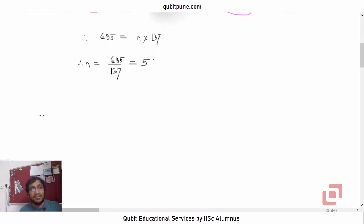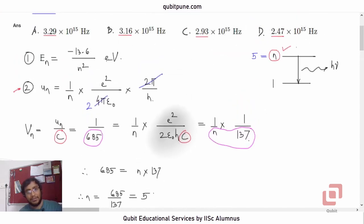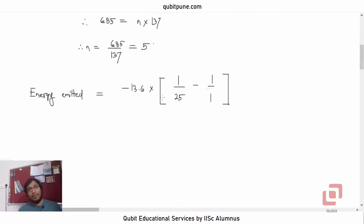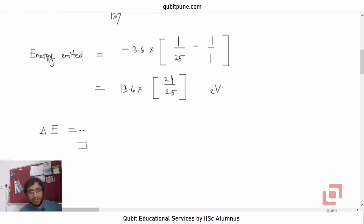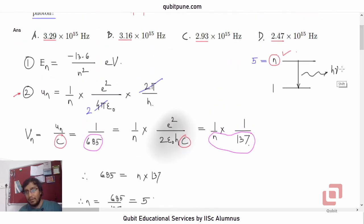Now let us calculate the energy emitted in this transition. Energy emitted will be negative 13.6 into 1 upon 25 minus 1 upon 1. Now how did I get this? It is from the first formula, negative 13.6 upon n squared electron volt. If we absorb the negative sign inside, then I will get 1 minus 1 upon 25, which will be 24 upon 25. This delta E is actually h nu. So the energy of the photon that will be emitted is delta E, the energy difference between the two energy levels, and that must be equated to h nu.